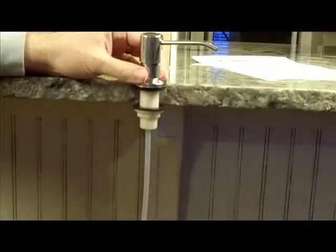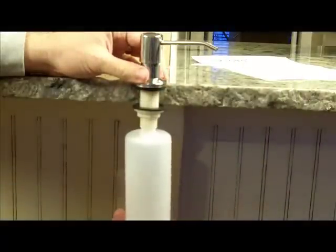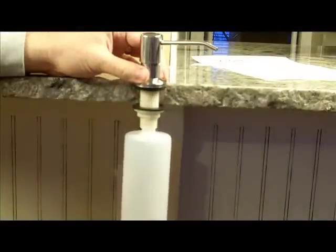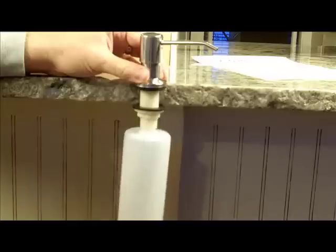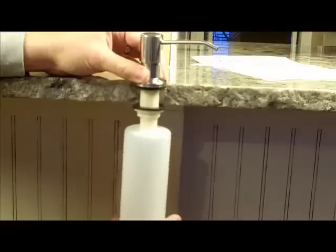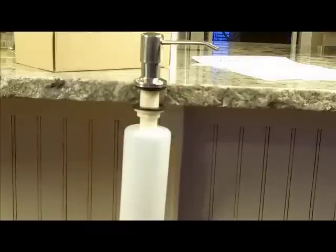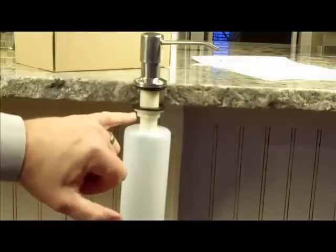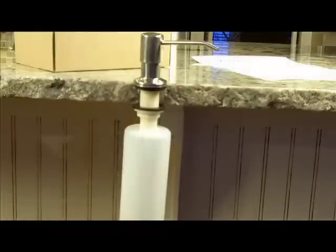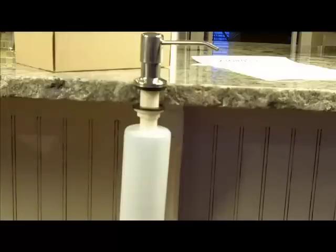Then you take the 17 ounce bottle and screw it in. Again, you don't want to over tighten the bottle. Just hand tighten it enough to where it's snug and secure and you're done. Again, if you want to take a crescent wrench and snug this lock nut down a little bit more, that would be fine. Just don't over tighten it.